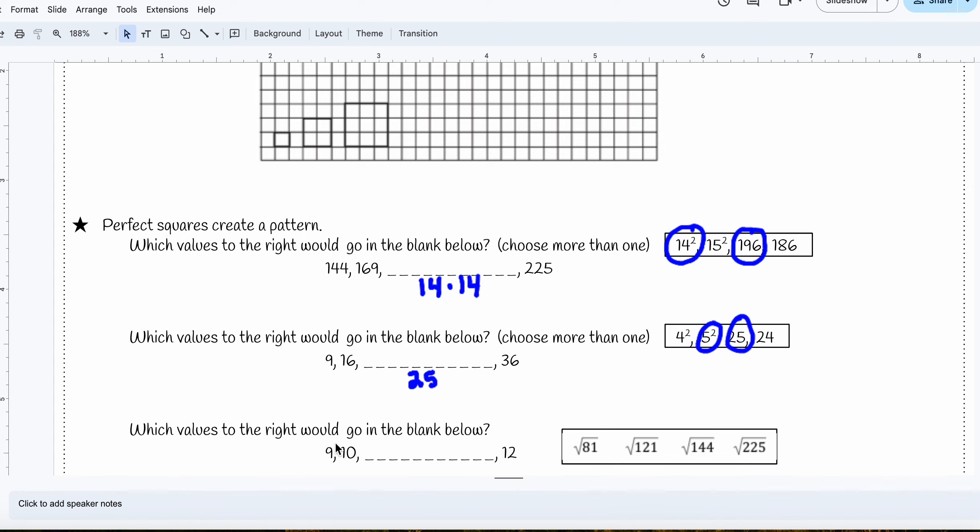Now which values to the right could go in the blank? Nine, 10, I'm looking for 11. But I look at my choices and I don't see 11. So I have to figure out 11 times 11 equals what number. And I know that it's 121, because 11 times 11 is 121. So the square root of 121 would be 11.